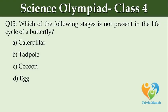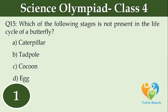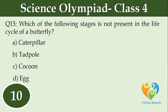Which of the following stages is not present in the life cycle of a butterfly? Option A: caterpillar, Option B: tadpole, Option C: cocoon, Option D: egg.